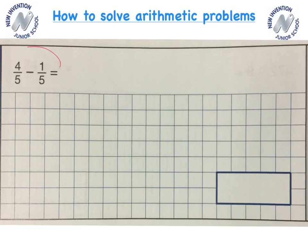4 fifths minus 1 fifth, is very simple because the denominator is the same. They're both fifths. So all I have to do is take 1 from 4 which gives me the answer 3 fifths.